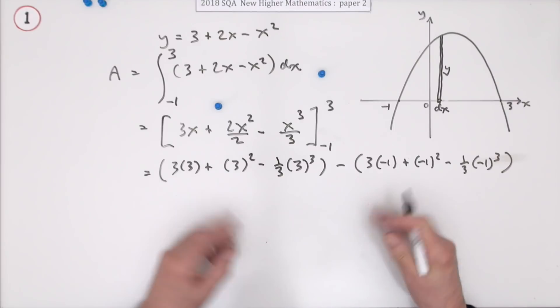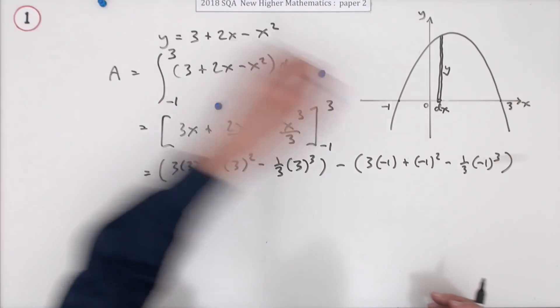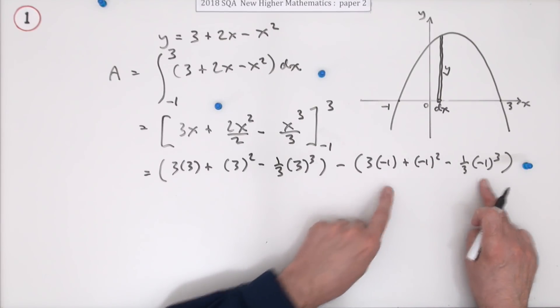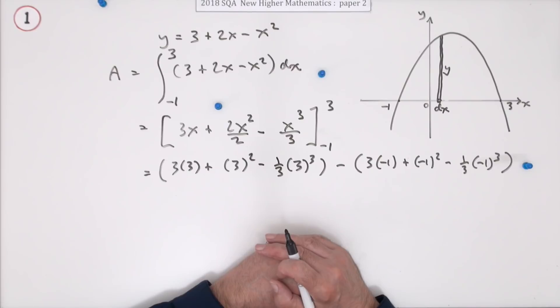that's just a negative 1 squared minus a third of negative 1 cubed. It's a bit tedious, but you're getting a mark for doing that. You're getting a mark for just putting their numbers in. Evaluate it at 3 and evaluate it at negative 1. And of course, those two answers have been subtracted.